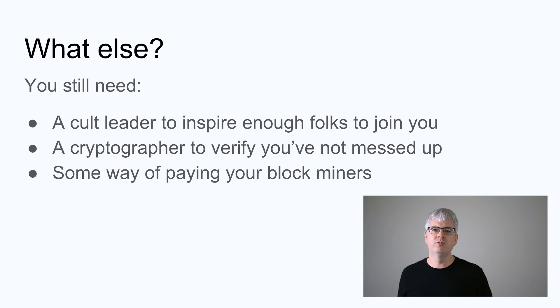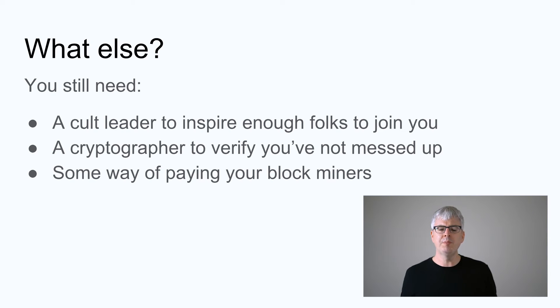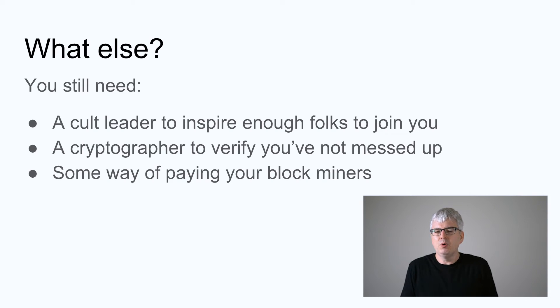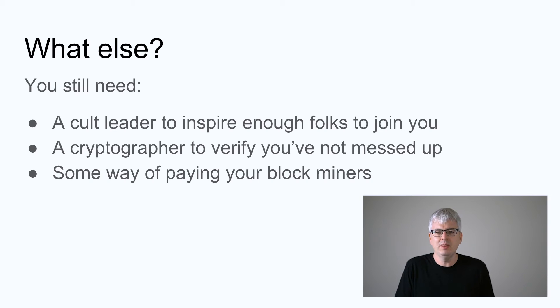Finally, given how inefficient proof of work is, you need to bribe your users — give them something to make it worth their while to spend all the electricity trying to solve these block mining problems. With Paxos, you don't need to bribe anyone, because it's just so cheap and efficient that people probably do it for free. In short, using a proof-of-work-based consensus in most application domains is insane. Unless you're building a cryptocurrency, it doesn't really make sense to spend all these extra compute resources creating a public blockchain.